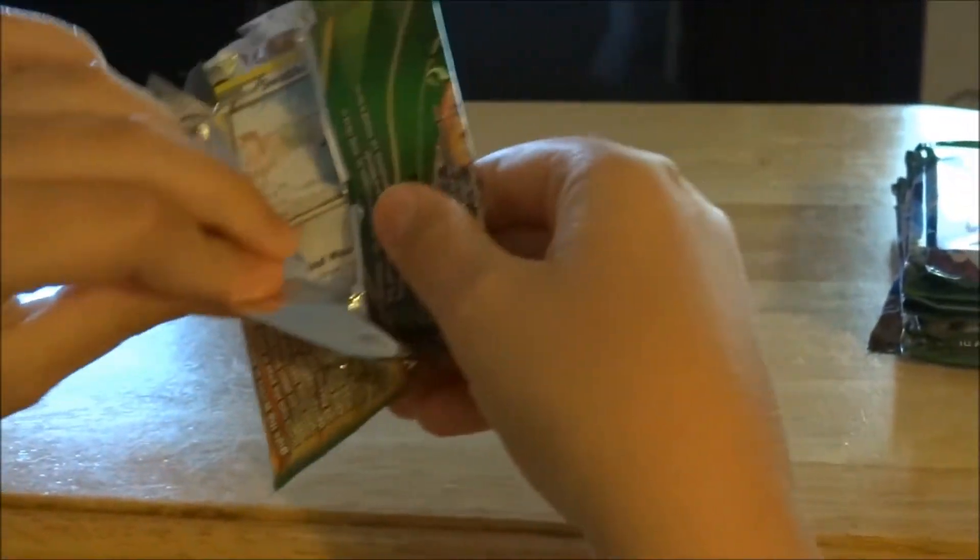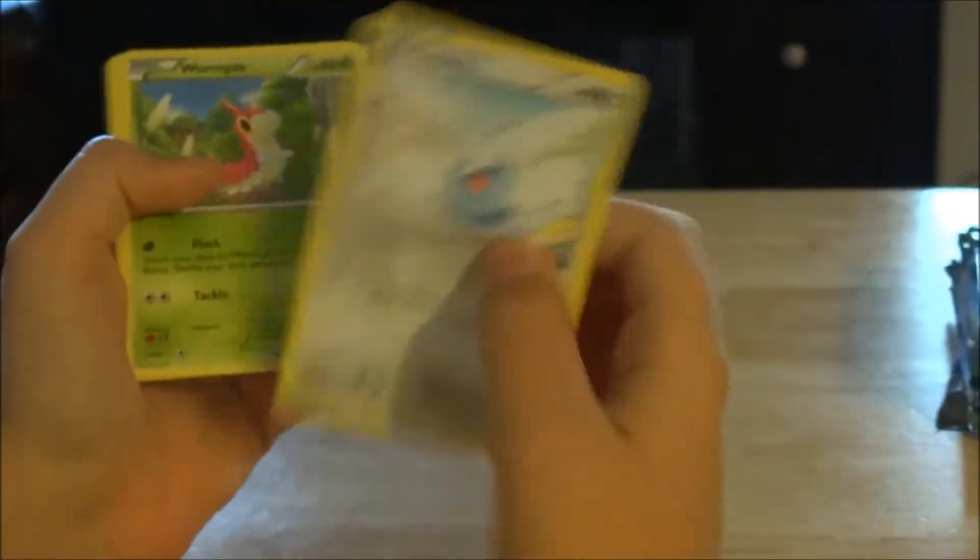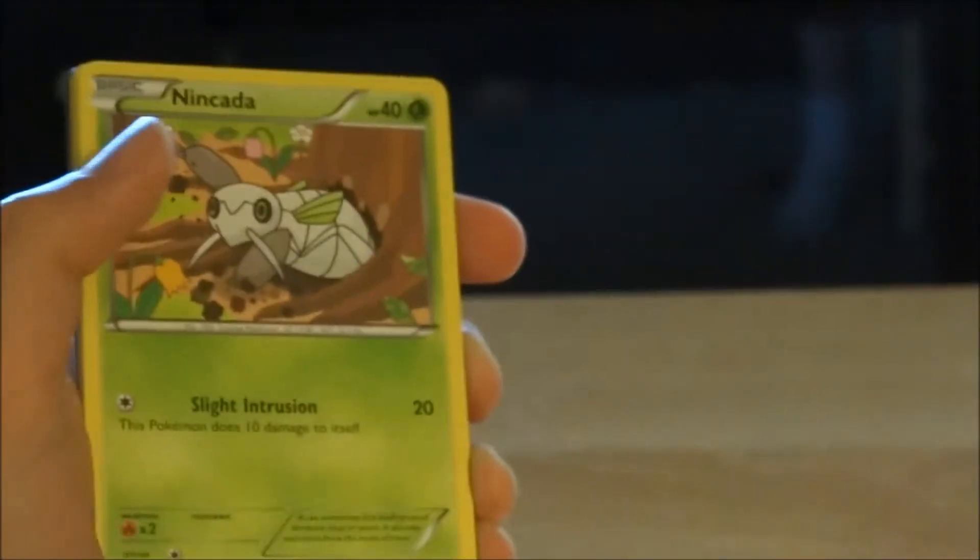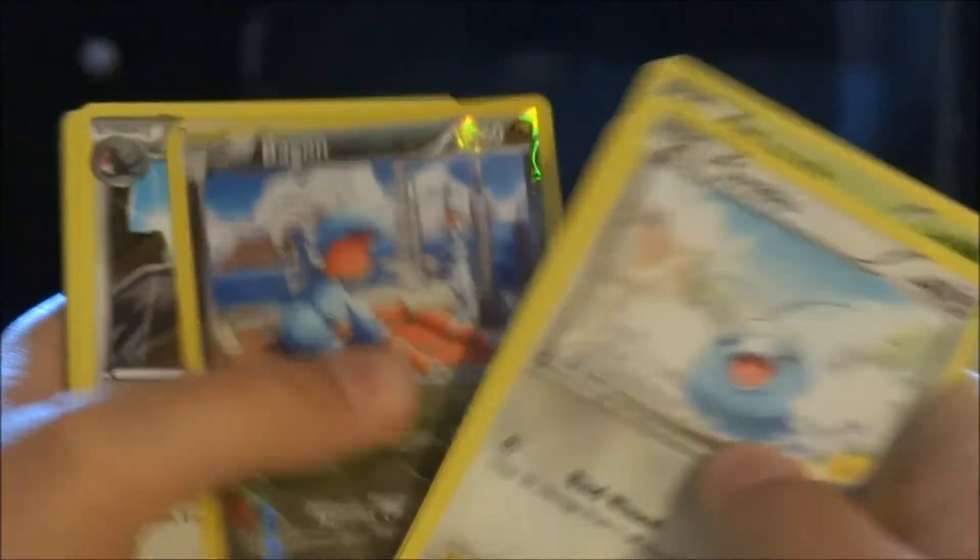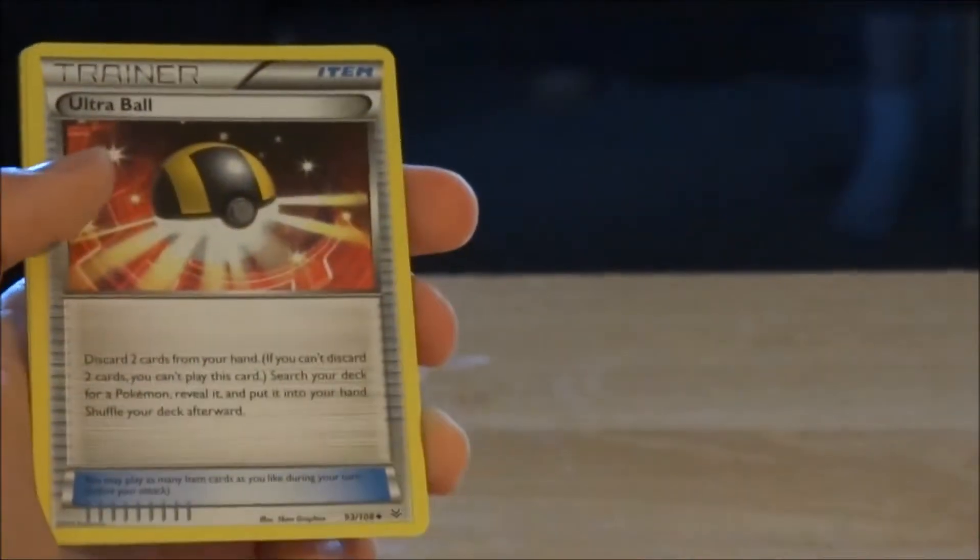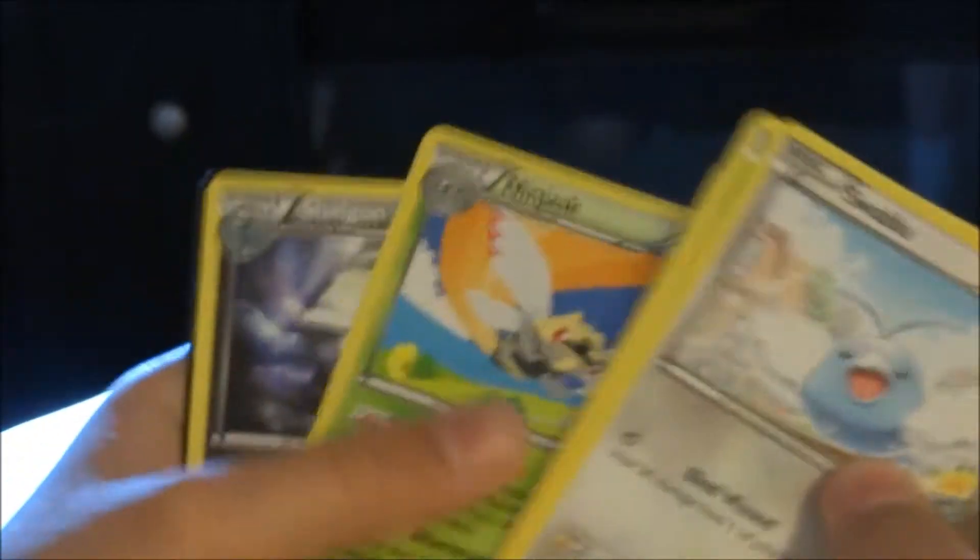Hopefully we can get at least two Ultra Rares. Swellow, Beautifly, Combusken, Chatot, Binacle, Spheal, Reverse Bagon, Swellow, Ultra Ball, Ninjask, Shelgon.